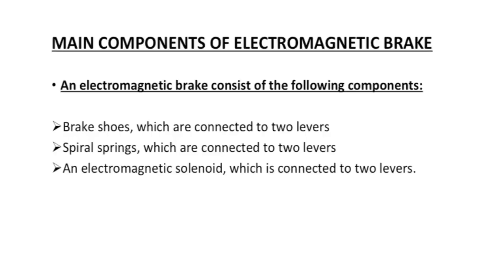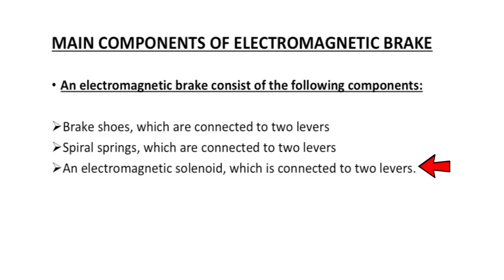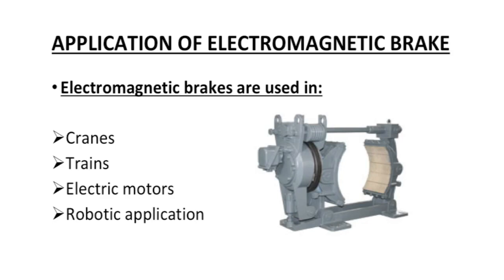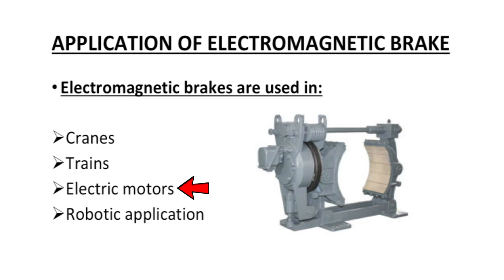Components of electromagnetic brakes: brake shoes connected to levers, a spiral spring connected to the two levers, and an electromagnetic solenoid connected to the two levers. Applications: this type of brake is used in cranes, trains, electric motors, and robotic applications.